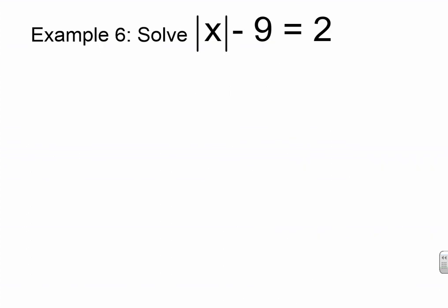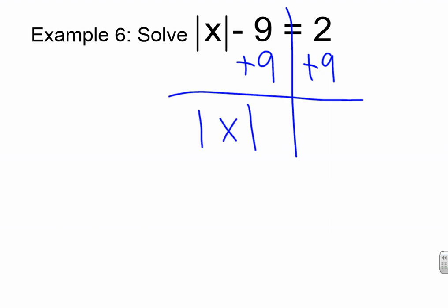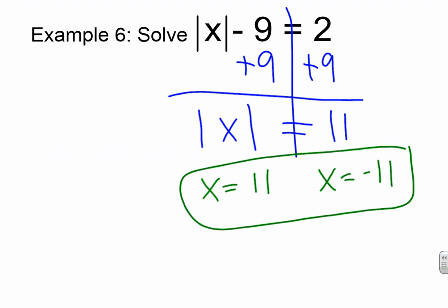Now here's where things get a bit different. When I ask that same question — is everything on the side of X inside the absolute value bars? — and if your answer is no, then you have to move whatever's on the outside before you write it twice. So I add 9, since 9 was outside the absolute value bars, and I get the absolute value of X equals 11. Notice I have not written it twice — the absolute value bars are still there. Now I go back through it: I write it twice, once with the positive, once with the negative. My final answer is X equals 11 and X equals negative 11.